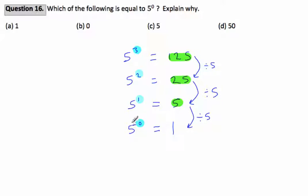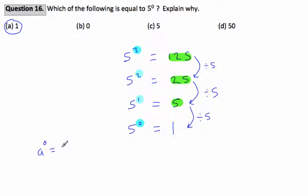So 5 to the power of 0 is 1, which is the answer in part A. This can be done with any number — it doesn't have to be 5 to the power of 0; it could be 2 to the power of 0. We actually get a rule of indices from this, which says that any number to the power of 0 is equal to 1. You can try this on your calculator — just put any number in, whether it's a decimal, a fraction, any number at all. If you raise it to the power of 0, you will always get the answer 1.